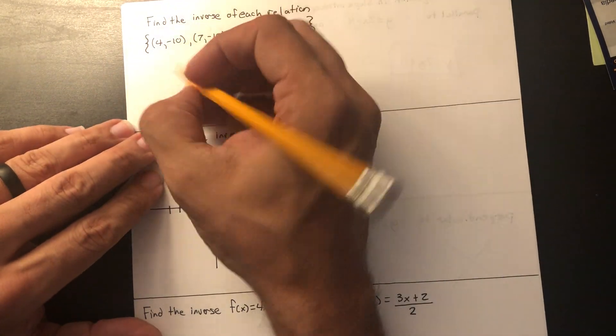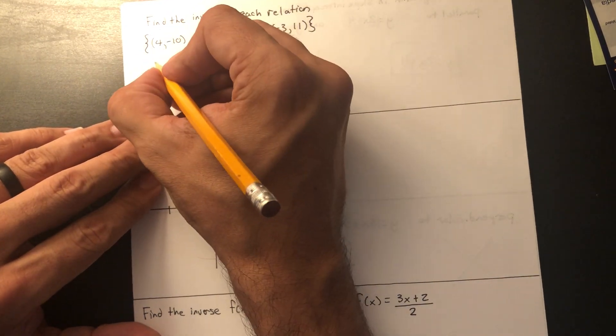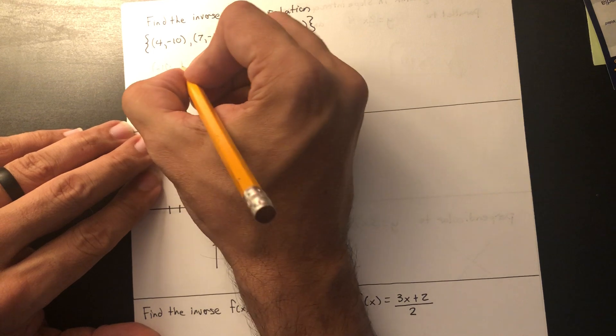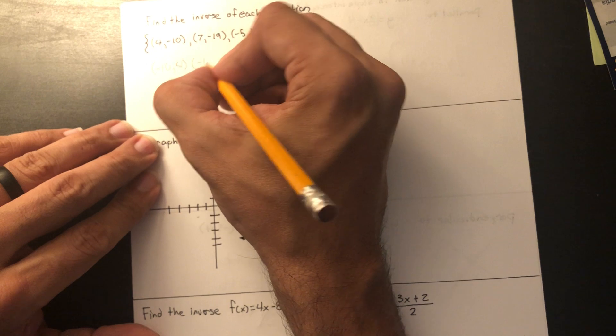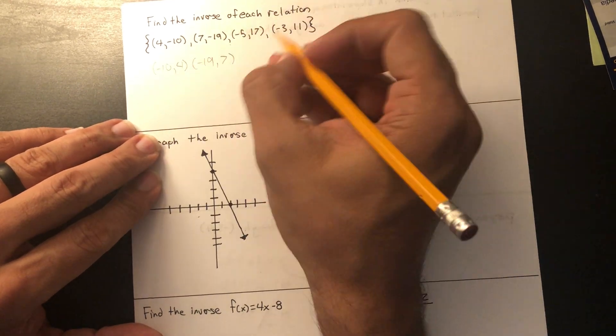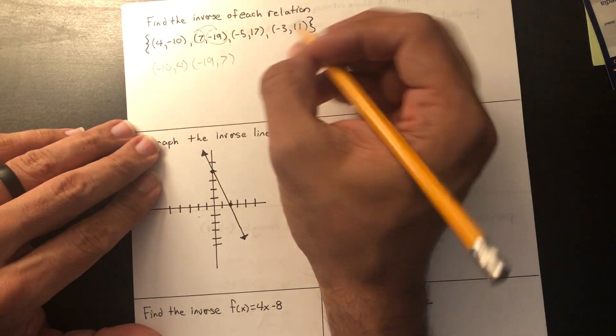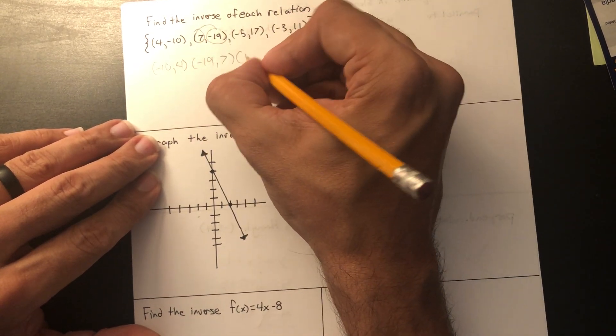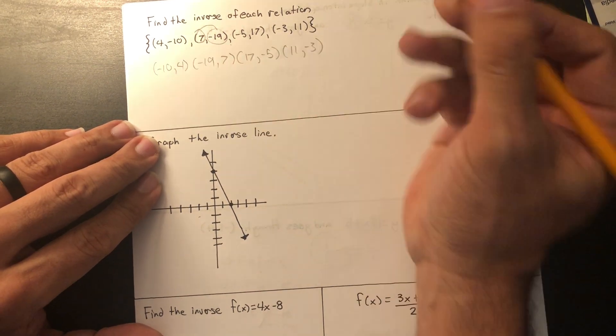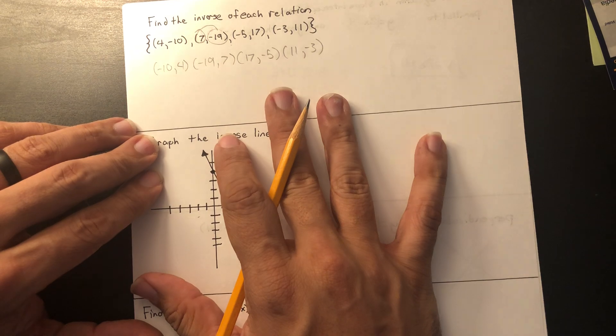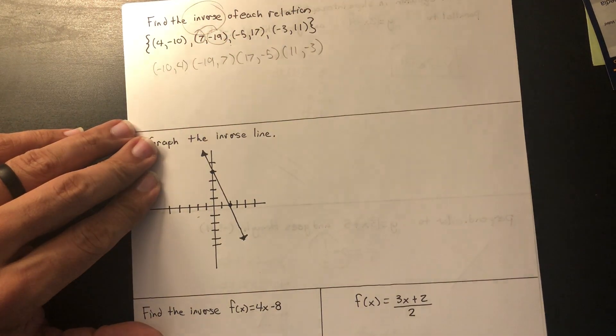All the answers for x and y are going to switch places. The answer to the inverse of these relations is going to be negative 10, 4. Then it's going to be negative 19, 7. You see how I'm not changing the sign? I'm just literally changing this one into this one, just switching spots. So that's going to be 17, negative 5, and 11, negative 3. Inverse means that x and y are switching locations.